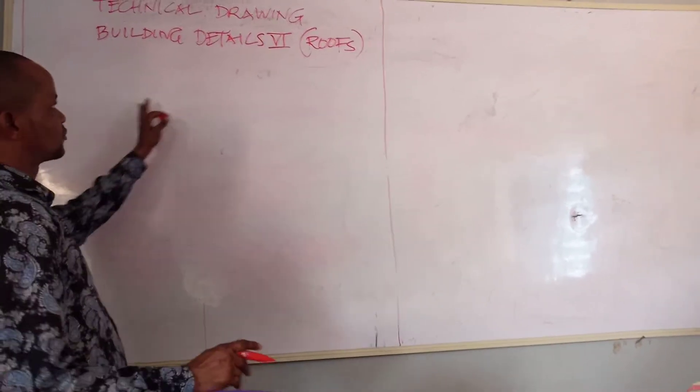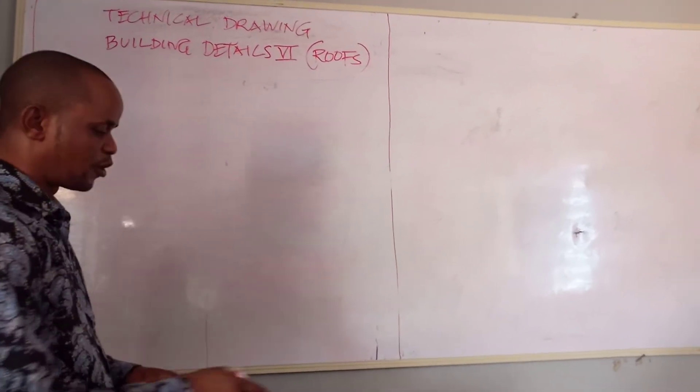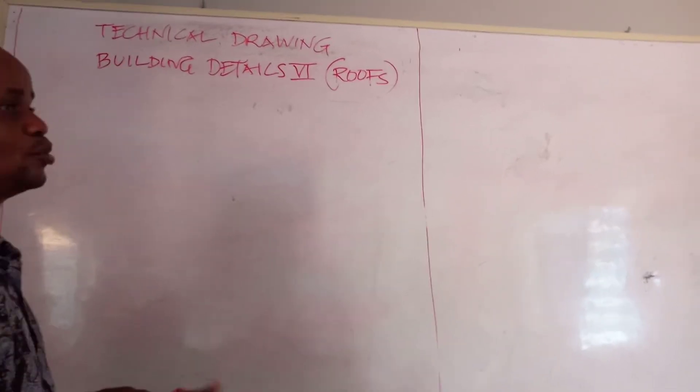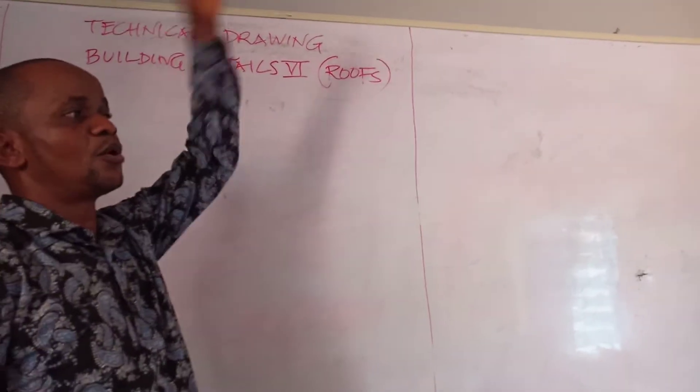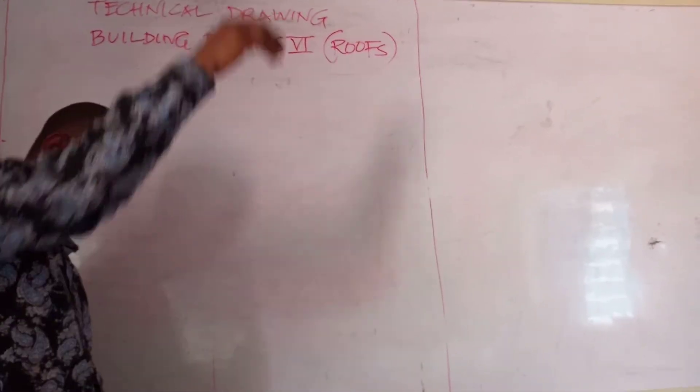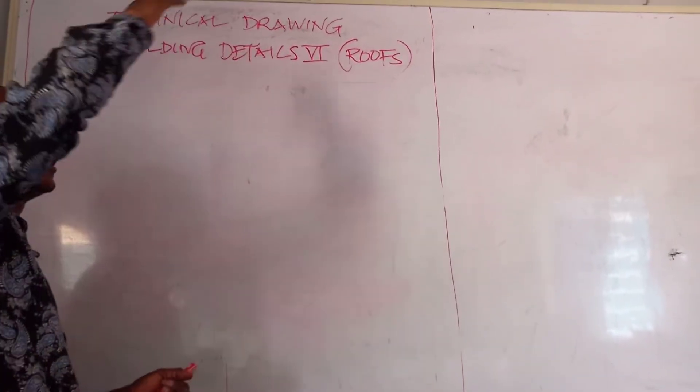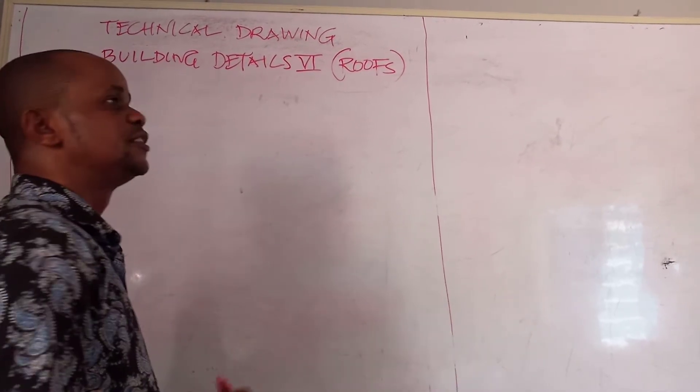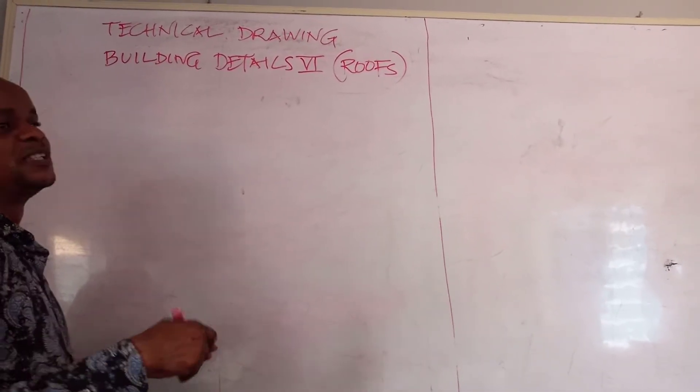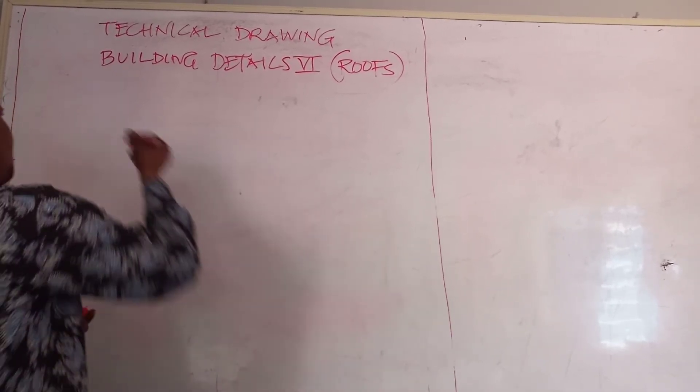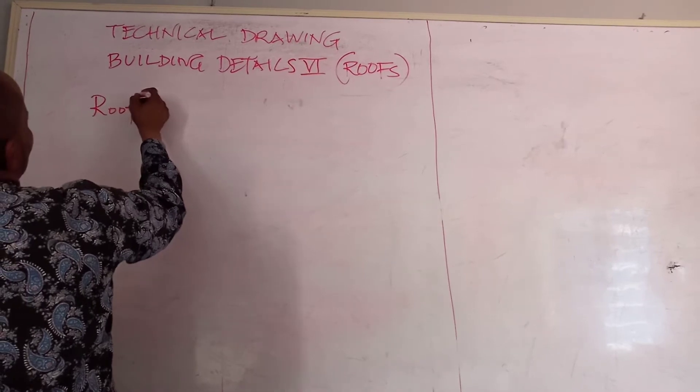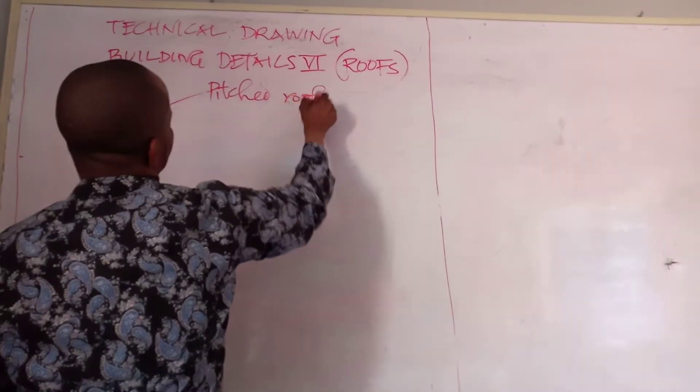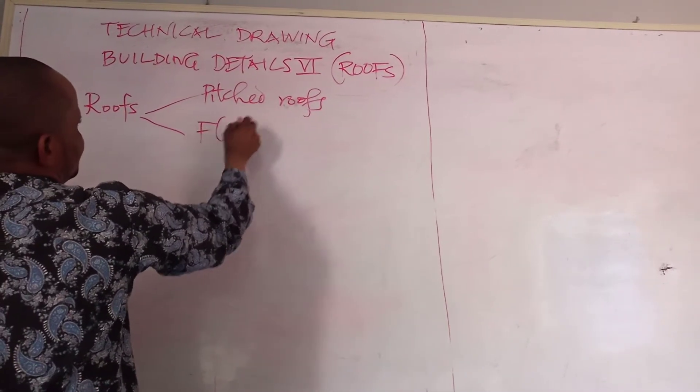Maybe I should just remind you of some things we discussed before I move further today. We started with defining what roofs are, and we said they are the uttermost covering of a building which can come in different forms. We have said that roofs can be classified into pitched roofs or flat roofs.